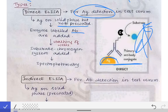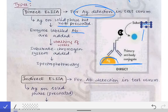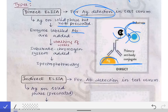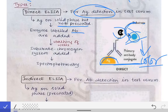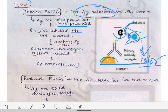After washing, we add the substrate-chromogen system. The enzyme linked to the antibody — which has been fixed by the antigen — acts on the substrate and converts it into a chromogen, causing a color change detected by spectrophotometry. When we observe a color change, we can confirm that the patient's serum contained the antigen. This is the direct ELISA.